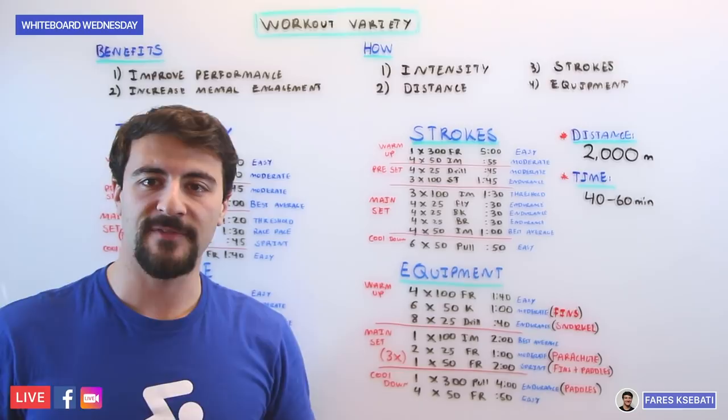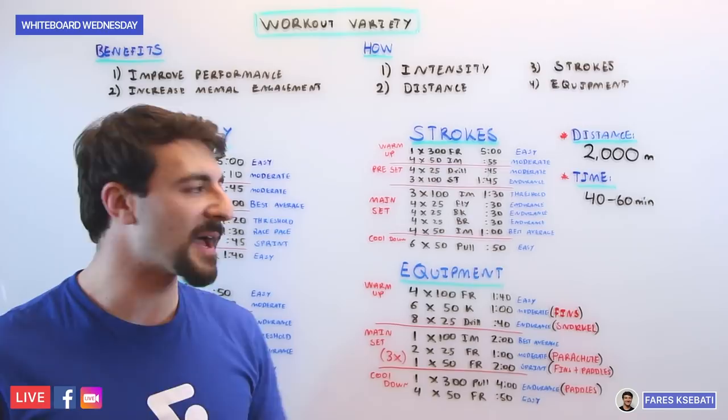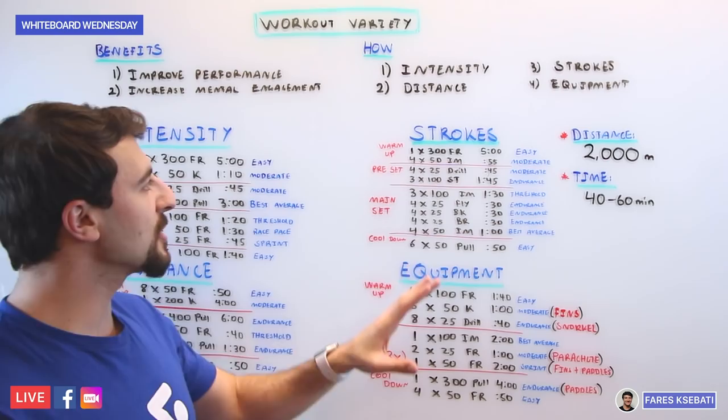And then you're going to go 4x50s IM order on the minute, best average, and that'll conclude the main set. And you'll finish with 6x50s pull.